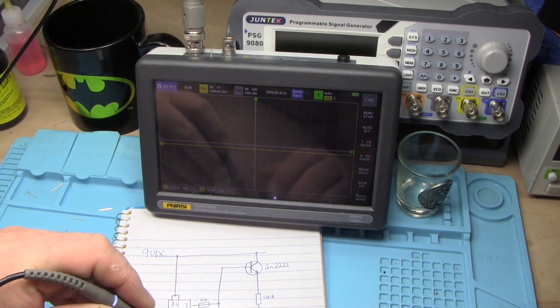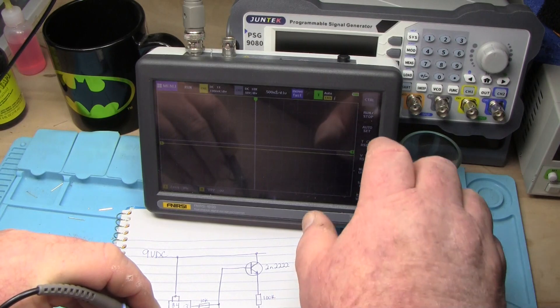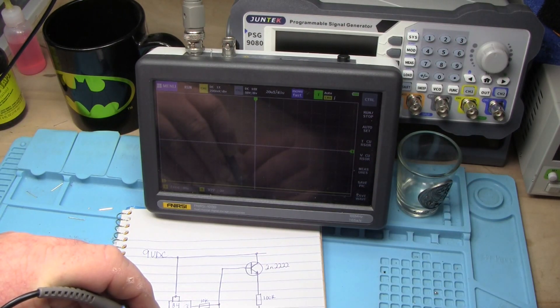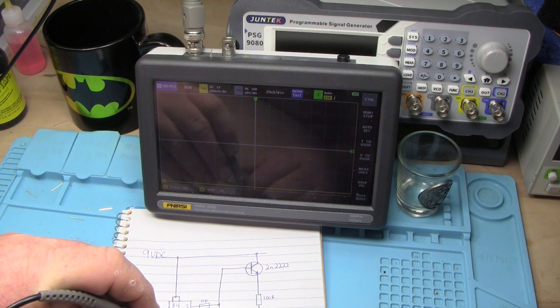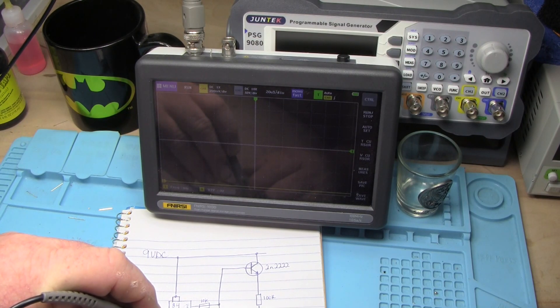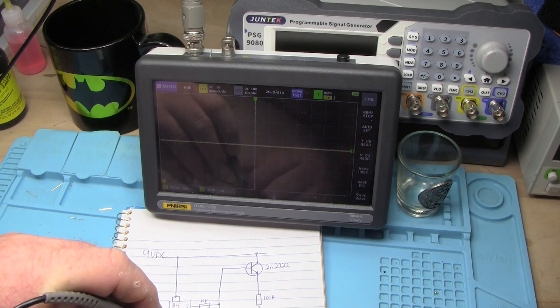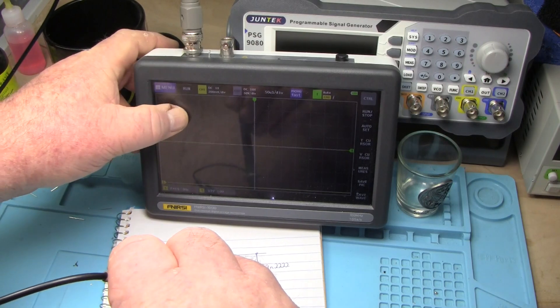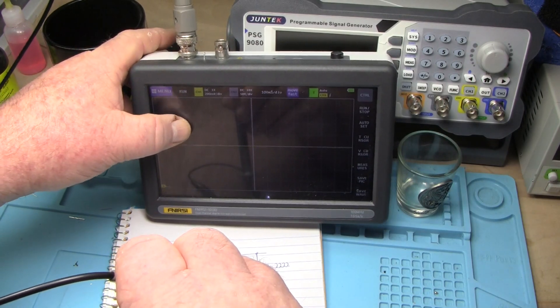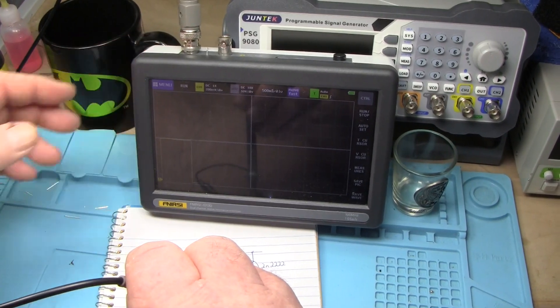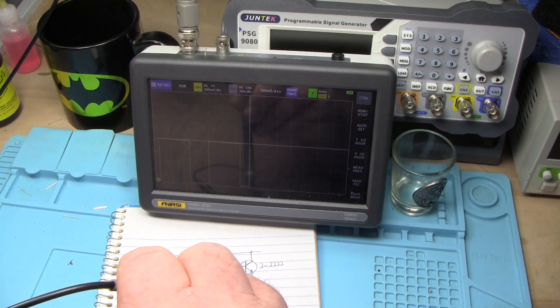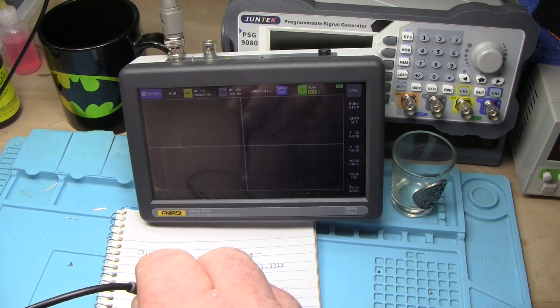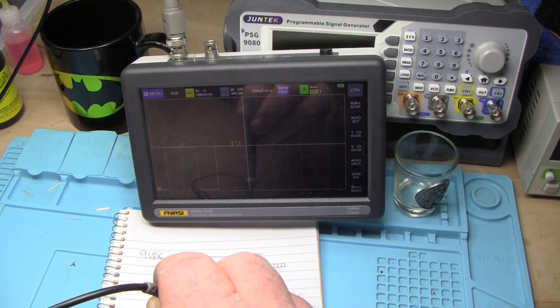Let's see if we can adjust the camera a little bit so you can see the scope. If we look at the output from the 555, hit the auto set here. You can see it's switching between high and low. Let's see if I can't slow that down a little bit. There we go. So you can see the square wave output from the 555 timer.